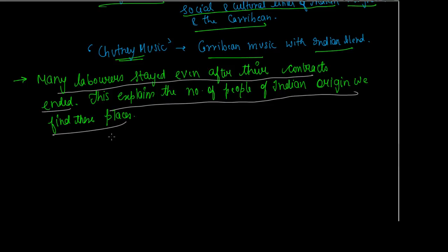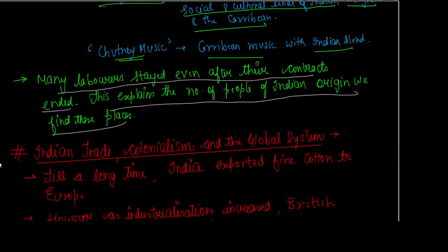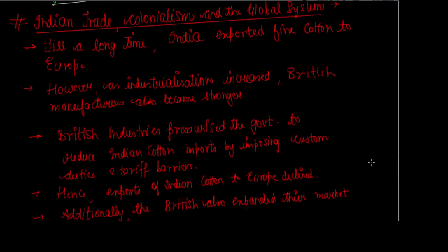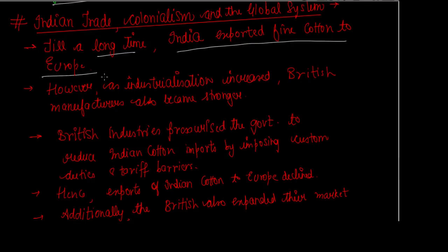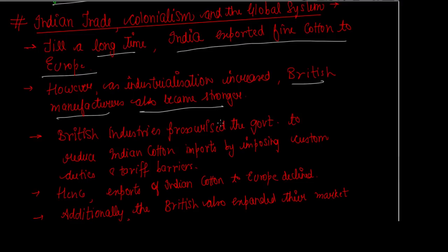Now we look at the last topic: Indian trade, colonialism, and the global system. For a very long time, India exported fine cotton to Europe. But after the industrial revolution and industrialization, British manufacturers produced cotton fabric and became strong competitors. India's fine cotton exports to Europe competed with British industries.